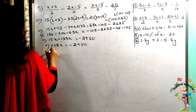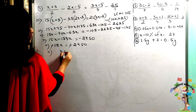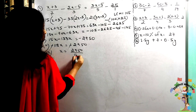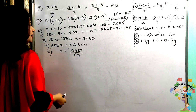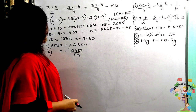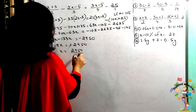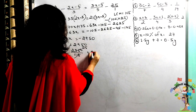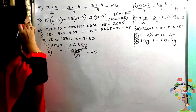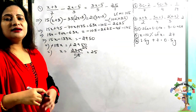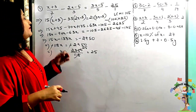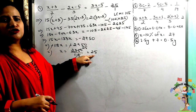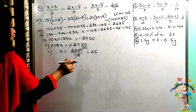The minus signs cancel out, so x = 2950 divided by 118. You can divide and simplify by 25, giving x = 25. Now we must verify that the left hand side equals the right hand side by substituting x = 25.